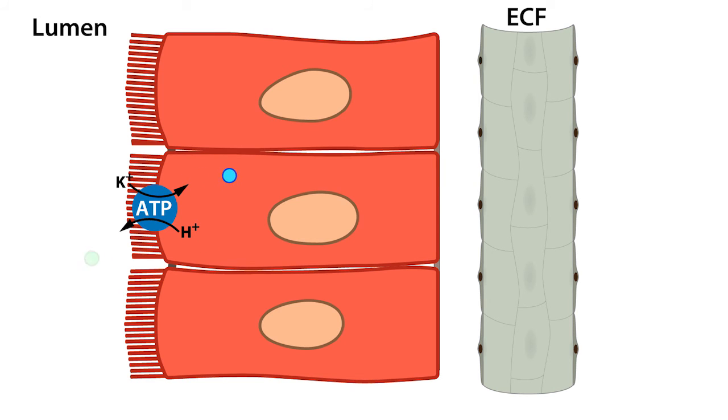Once inside the cell, potassium uses the electrochemical gradient to passively exit the cell via potassium channels located in the basolateral membrane.